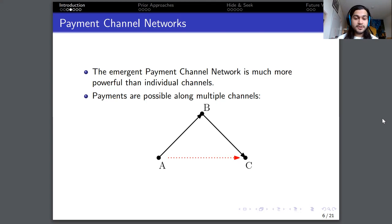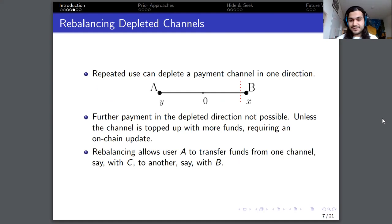However, multiple uses of the same channel can result in depleted channels. So let's say that we're back to this example of one channel between A and B, and suppose the balance is really close to x. This means that further payment in the direction from A to B is not possible. It would likely make the balance exceed our amount x, and therefore it's not possible. And so if A wants to continue paying B, it would necessitate a topping up transaction, which is an on-chain transaction which increases the capacity of this payment channel.